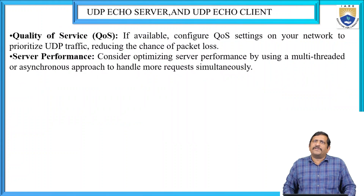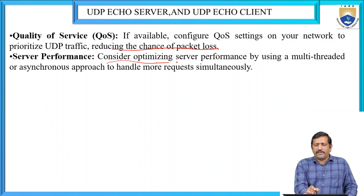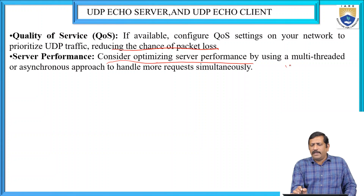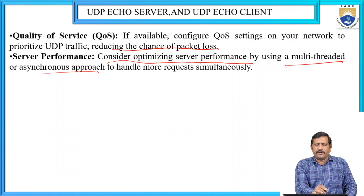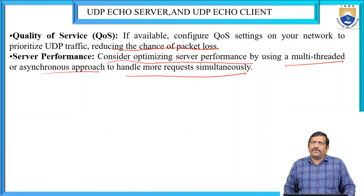Configure Quality of Service (QoS) settings on your network to prioritize UDP traffic, reducing the chance of packet loss. Also consider optimizing server performance using multi-threaded or asynchronous approaches, which allows the server to handle more requests simultaneously — receiving requests from many clients and responding to them at the same time, increasing server performance.